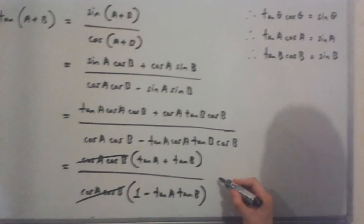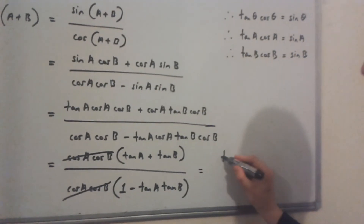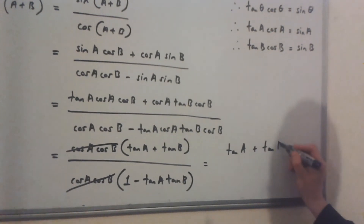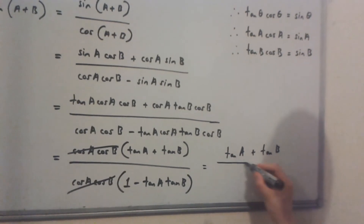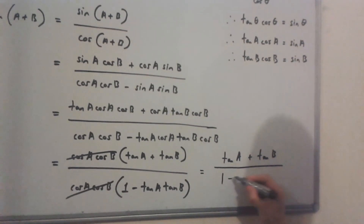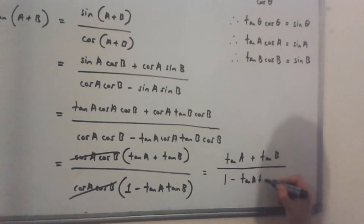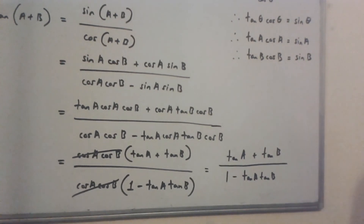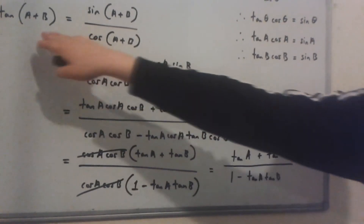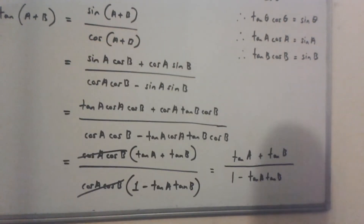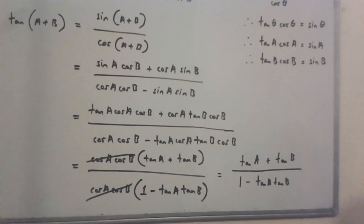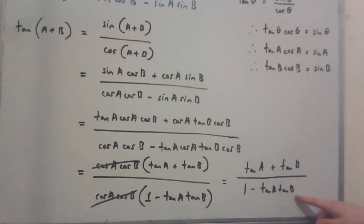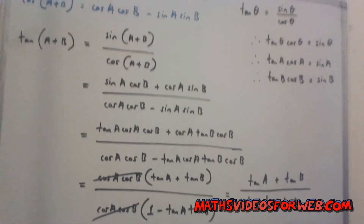Therefore, we're left with (tan a plus tan b) over (1 minus tan a·tan b), and this is equal to tan(a + b). So we've proven that tan(a + b) is equal to this expression right over here. Thank you for watching this video.